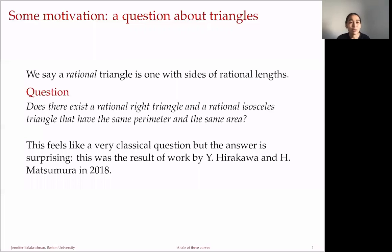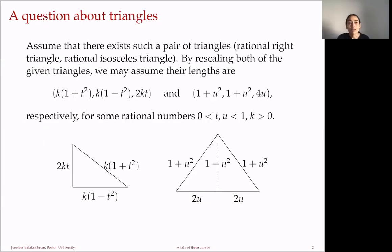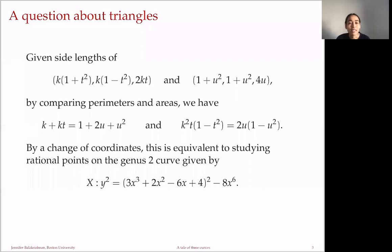This leads us to a question about a particular genus 2 curve. We assume there is such a pair of triangles and rescale so their lengths look as follows. For the rational right triangle: 2kt, k(1−t²), k(1+t²), where k is a positive rational and t is rational between 0 and 1. For the rational isosceles triangle: 1+u², 1+u², and 4u, for u between 0 and 1 and rational. We then compare perimeters and areas, giving two equations and three unknowns in k, t, and u. A small change of coordinates gives a genus 2 curve.